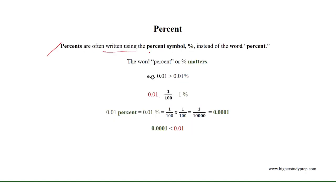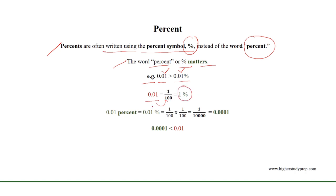Percents are often written using the percent symbol instead of the word percent. The word percent or the symbol matters. For example, if we consider 0.01 and 0.01 percent, we can see that 0.01 is greater than 0.01 percent. Here, 0.01 equals 1 over 100, which equals 1%, while 0.01 percent equals 1 over 100 times 1 over 100, which results in 0.0001 — less than 0.01.